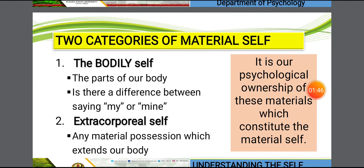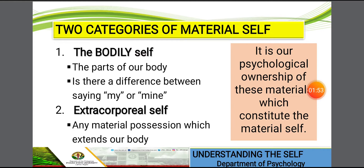There are two categories of material self. First is the bodily self, which consists of the parts of your body. Second is the extra-corporeal self, which consists of any material possession that extends our body. For example, if you have a favorite blanket, that's an extension of yourself, because it somehow identifies you from others.